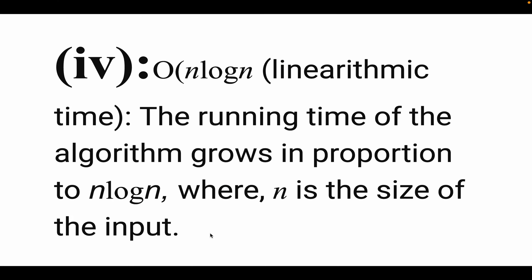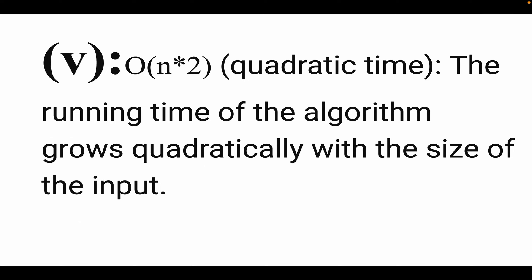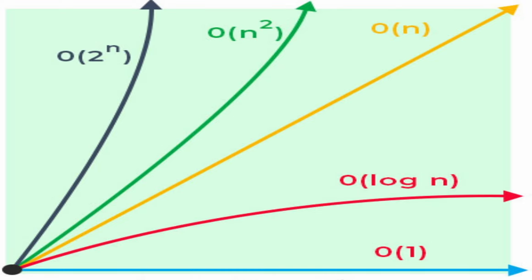The fourth time complexity is linearithmic time, represented by O(n log n). In this case, the running time of the algorithm grows in proportion to n log n, where n is the size of the input. The fifth time complexity is quadratic time, represented by O(n²). In this case, the running time of the algorithm grows quadratically with the size of the input, as seen in the graph.